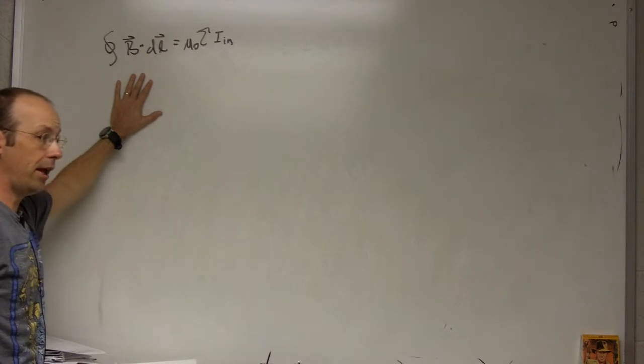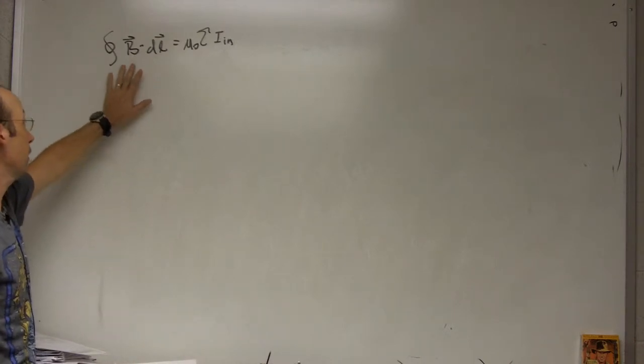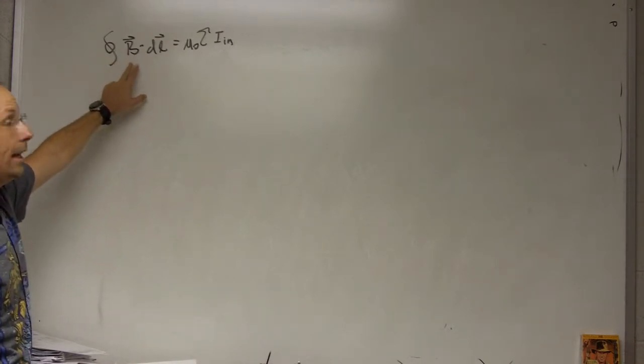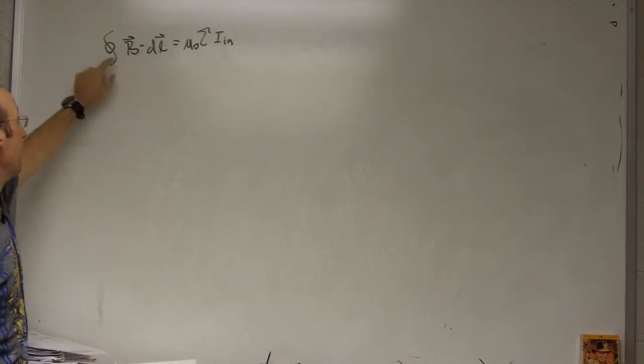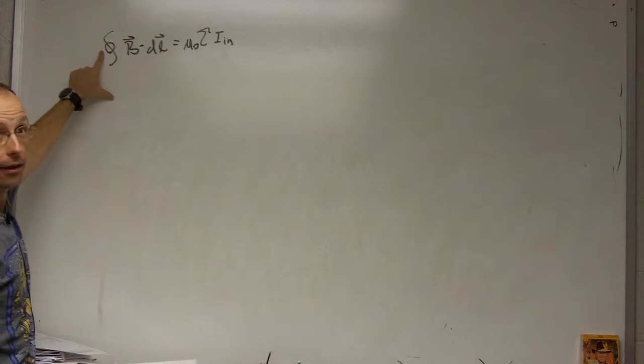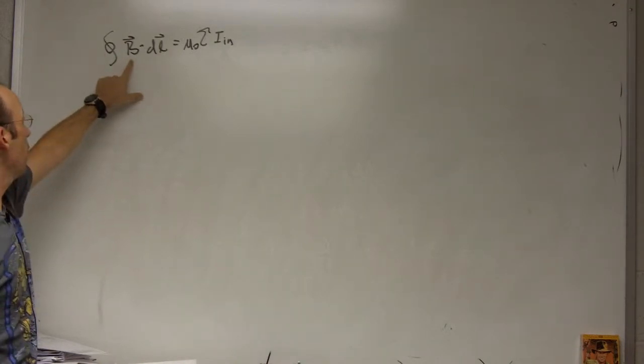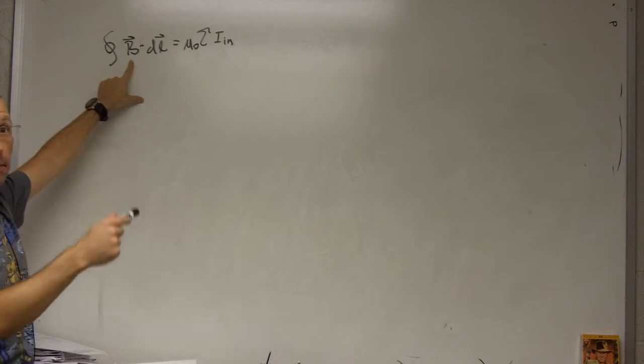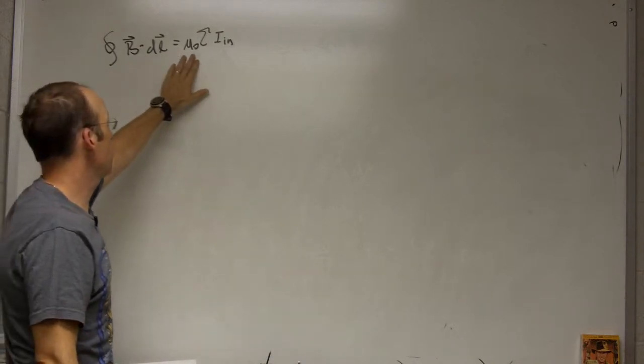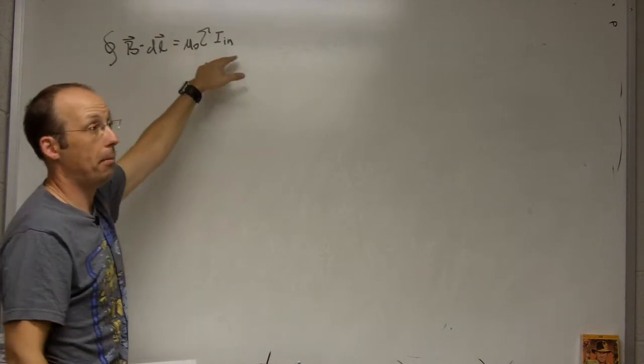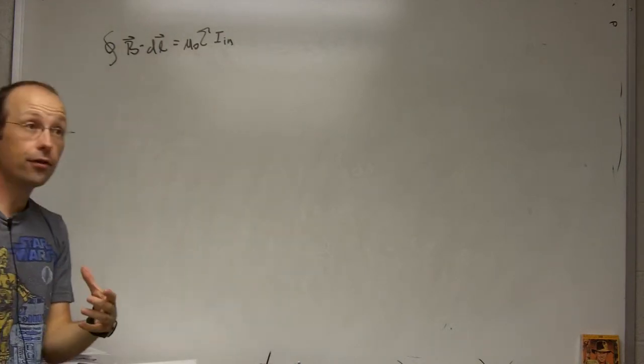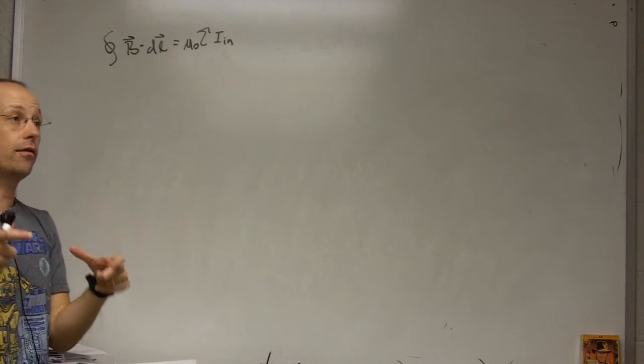So now I'm going to do an example with Ampere's law. This is Ampere's law. It says that if you take the magnetic field and you integrate over some path, this is a closed path integral, not a closed surface area, integrate B dot DL along that path, it can be any path. Then that would be equal to this magnetic constant mu naught times the amount of current that passes through that surface area defined by the boundary of that path.